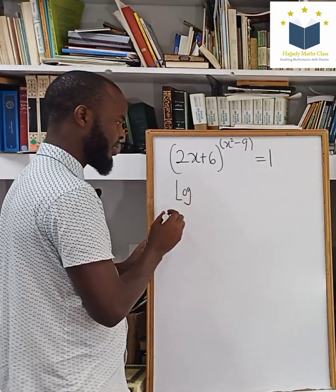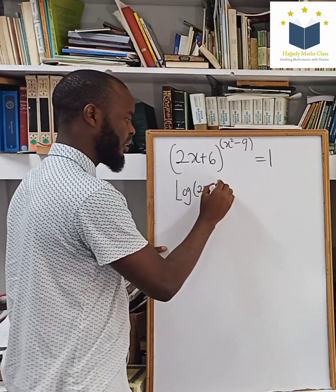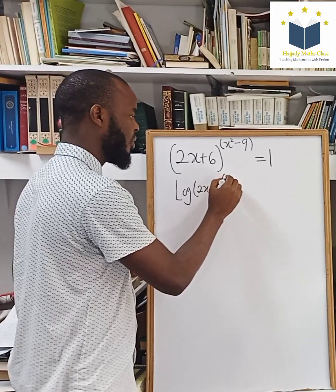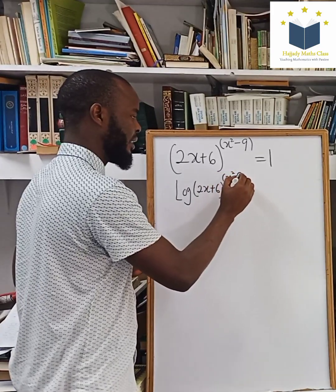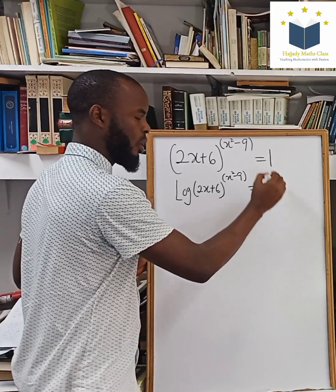So applying log reading to this, we have log in base 10, 2x plus 6 to the power of x squared minus 9 equals log 1.